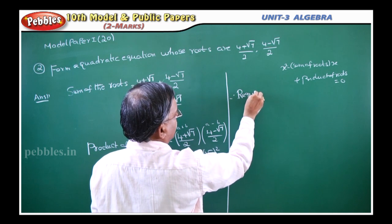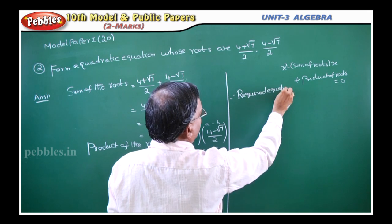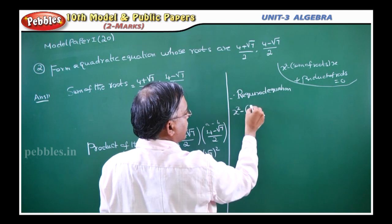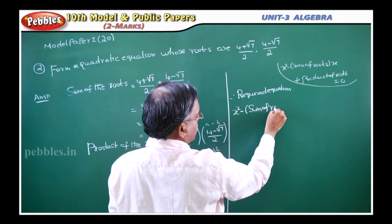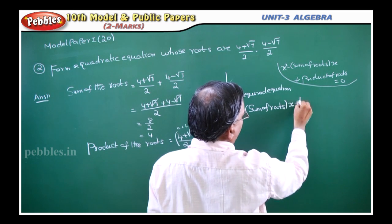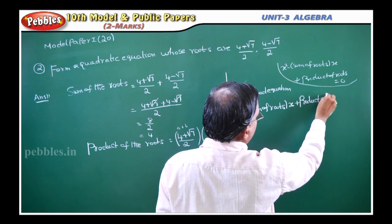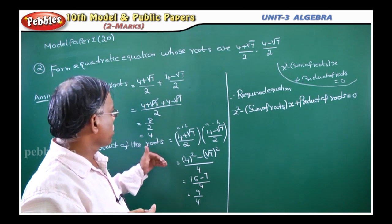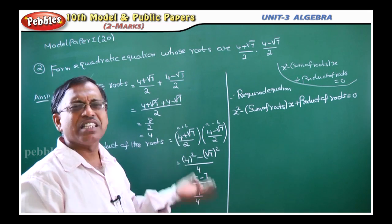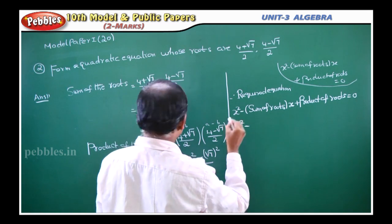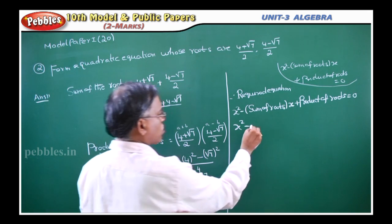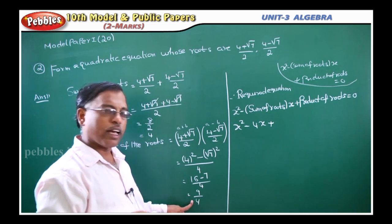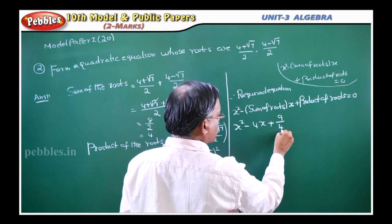Required equation: x² - (sum of roots)·x + (product of roots) = 0. Substituting, sum of roots = 4 and product of roots = 9/4, we get x² - 4x + 9/4 = 0.